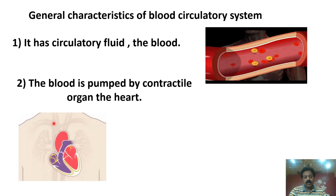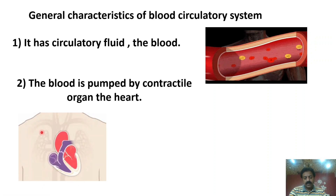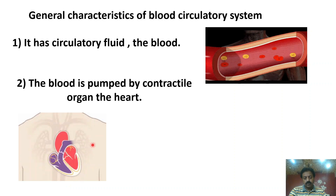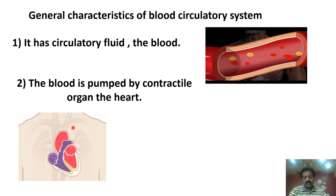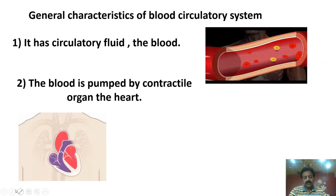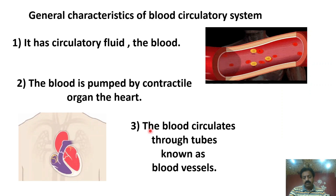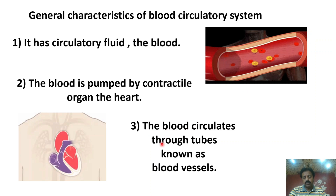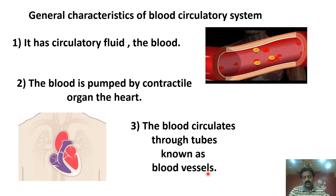Our heart is a pumping device — a pumping organ. When it pumps, blood is transported through arteries to different cells of the whole body. Third: the blood circulates through tubes known as blood vessels. Now we will read on the next slide: what are the three types of blood vessels?